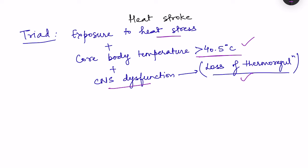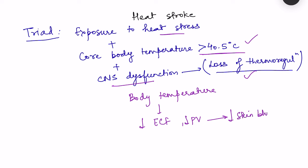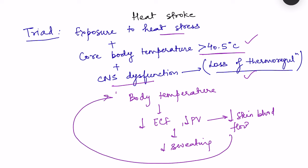There is a positive feedback loop in heat stroke: rising body temperature causes continuous sweating, leading to dehydration and decreased extracellular and plasma volume. This decreases skin blood flow — important for heat loss — and also decreases sweating, further reducing heat loss and further increasing body temperature. This vicious cycle escalates heat stroke.